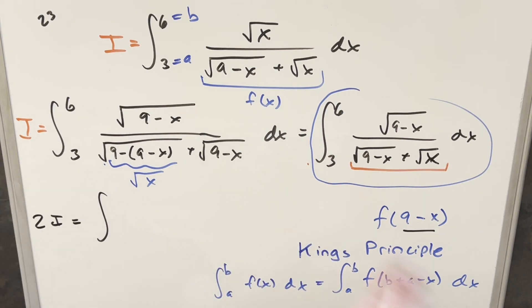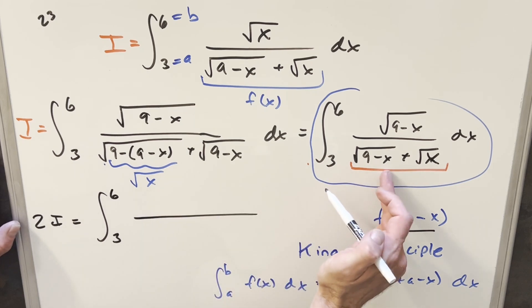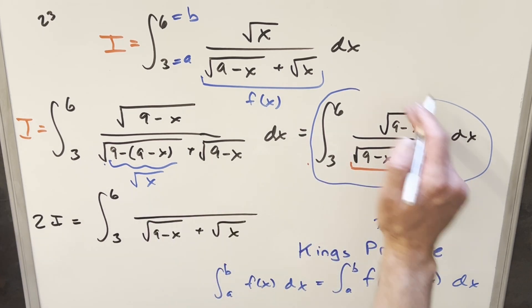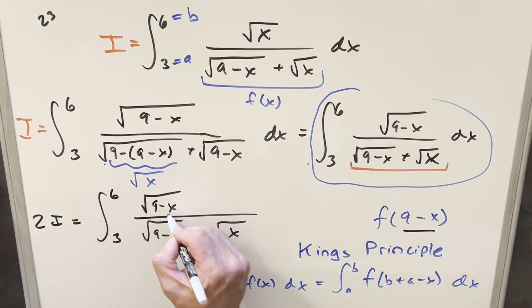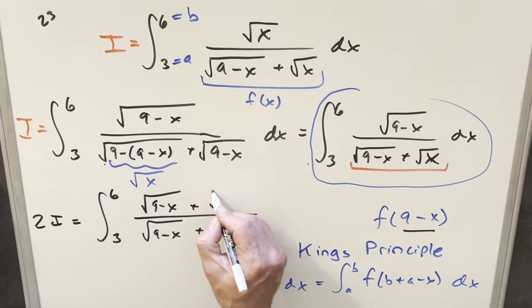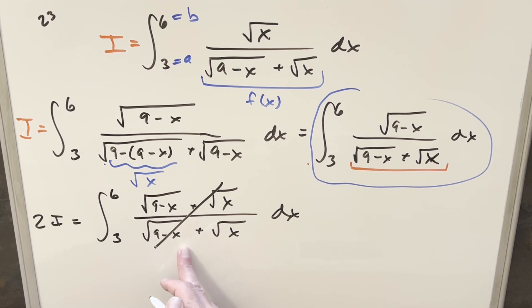So for two I, we've got the same bounds. We can slam these together into one integral. So we're going three to six. We have the same denominator on both. Then adding the numerators, we're going to have square root of nine minus x plus square root of x dx. But then what you notice, the whole thing cancels. The whole integral just becomes one.